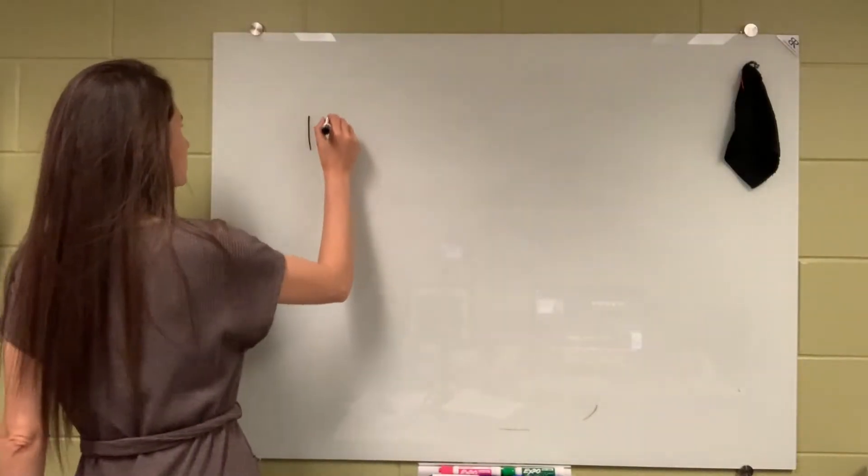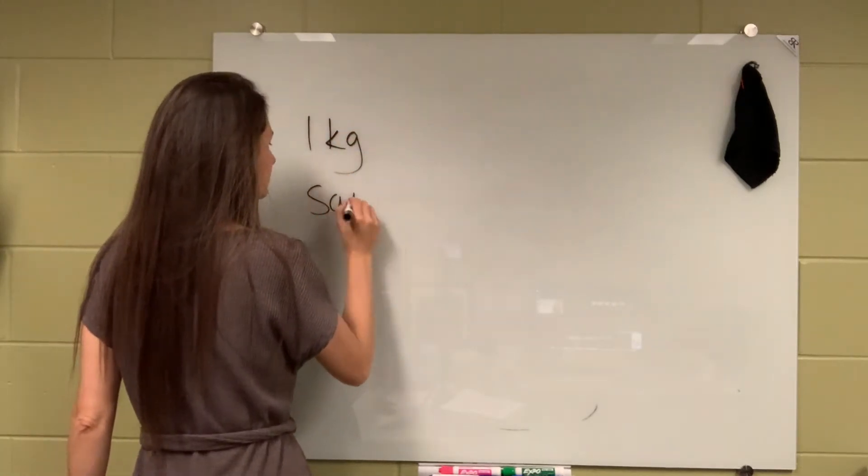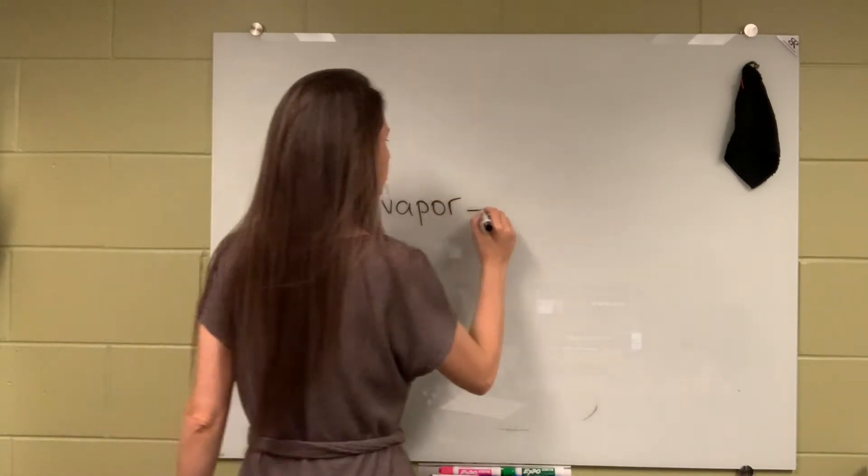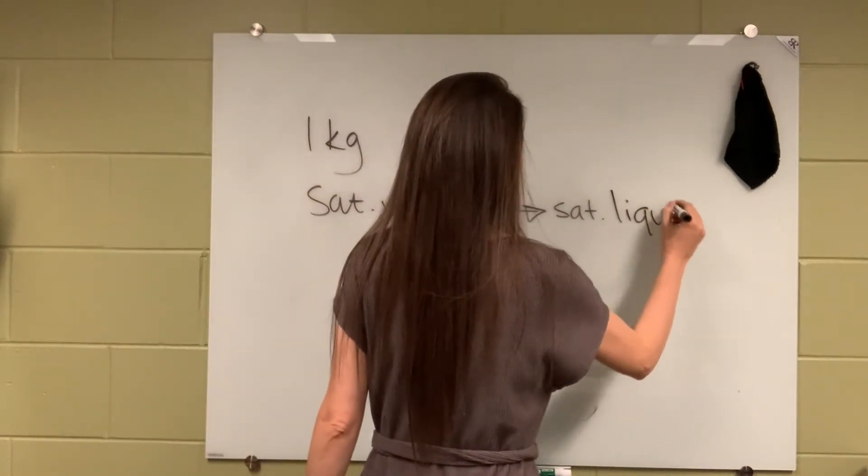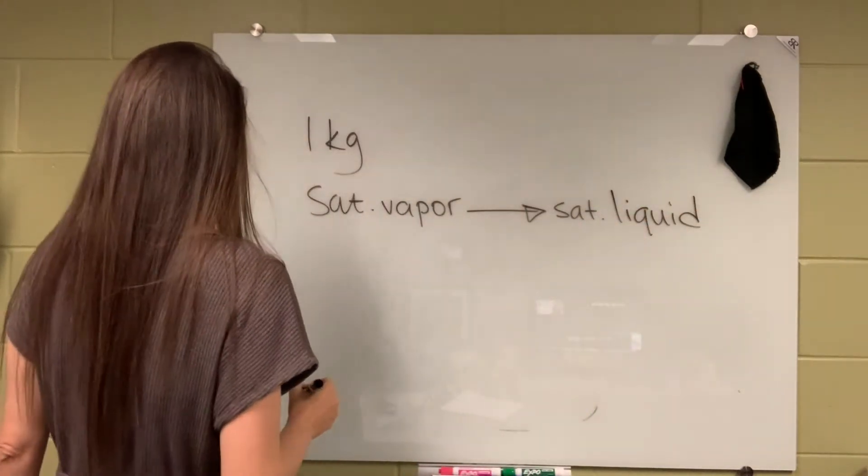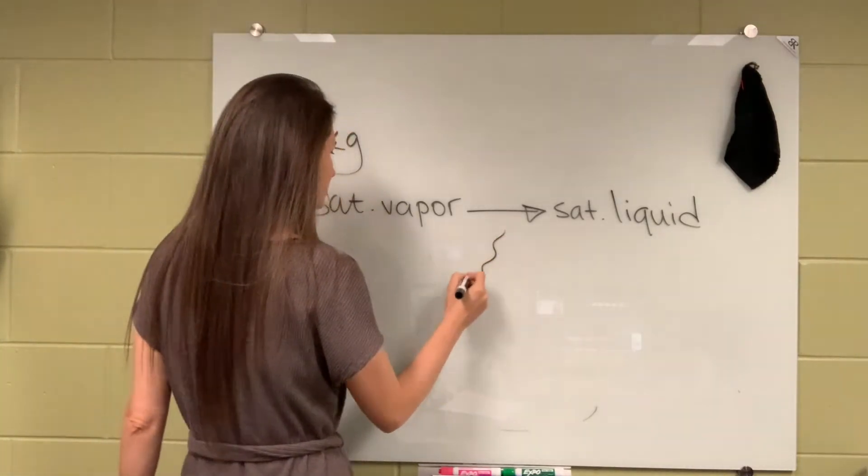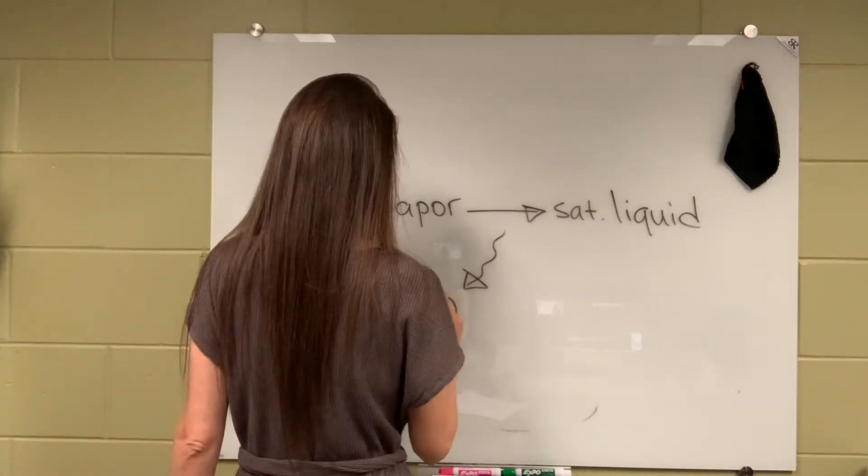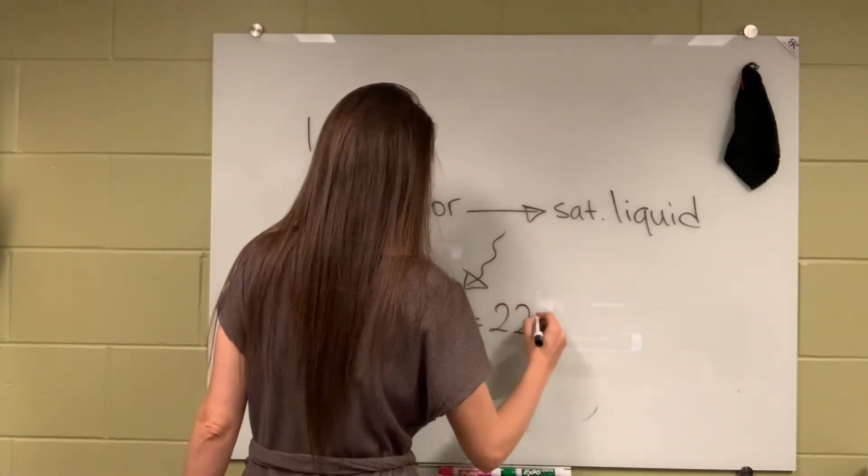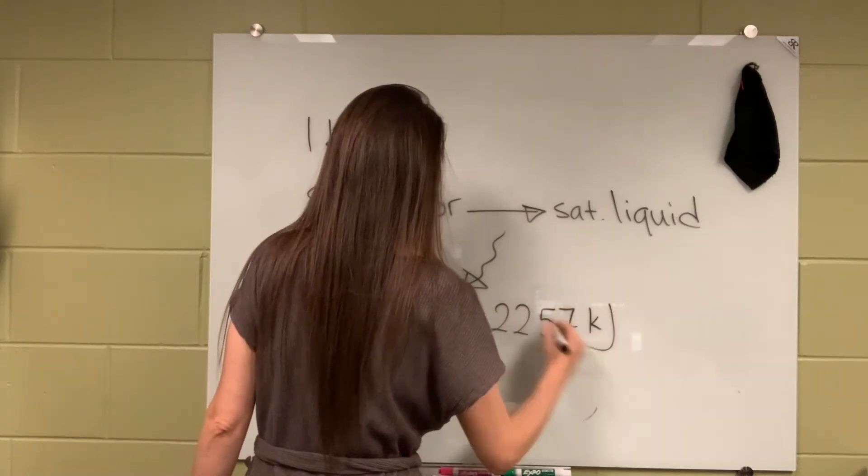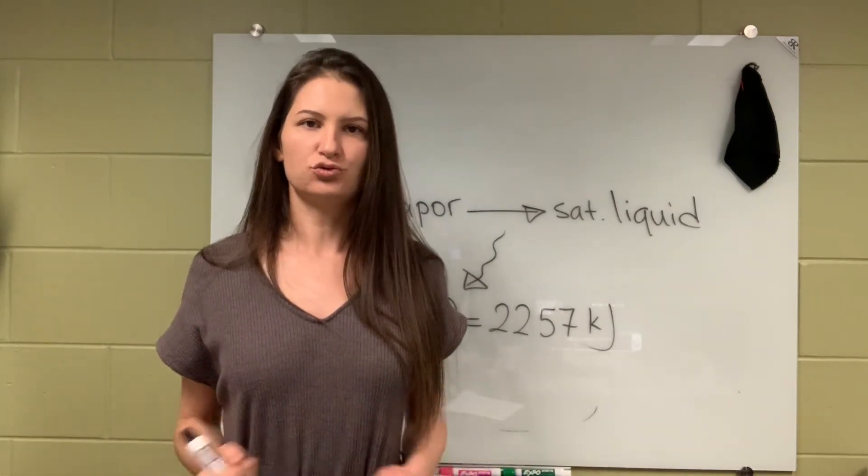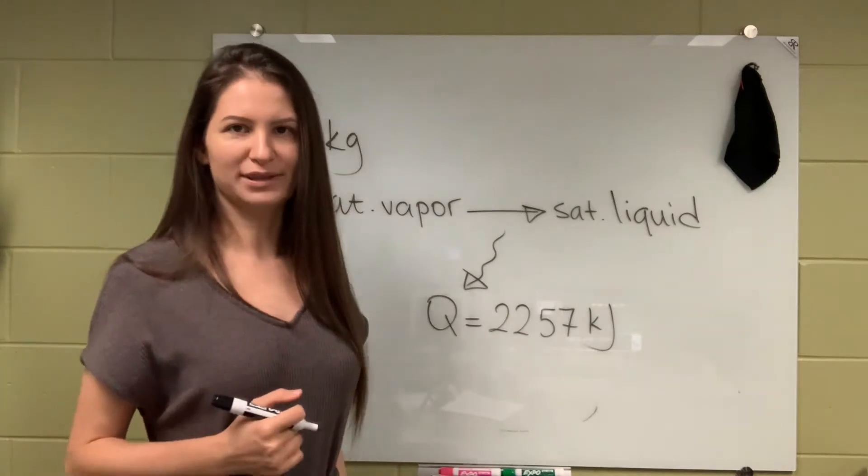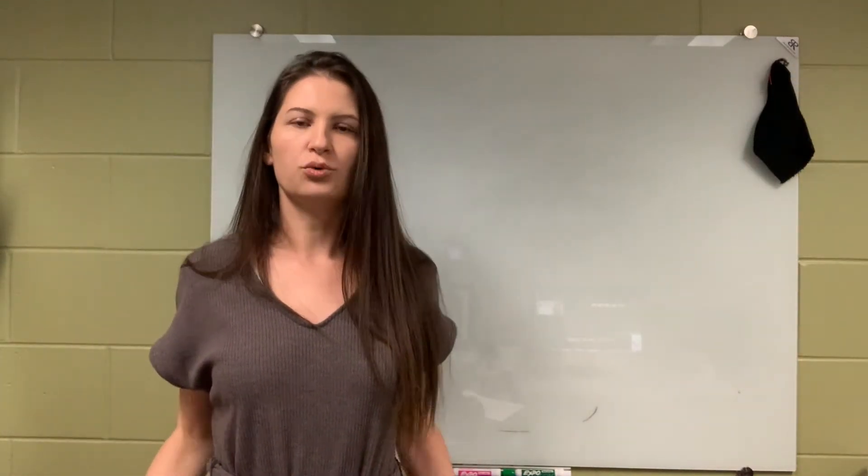All right everyone, we have one kilogram of saturated vapor of water going into saturated liquid. In this process it loses heat, it condenses and loses heat in the amount of 2257 kilojoules. And the question asks what is the total entropy change.